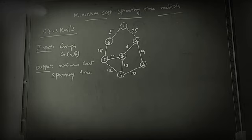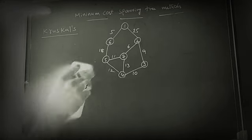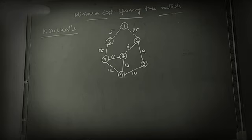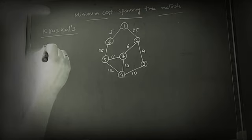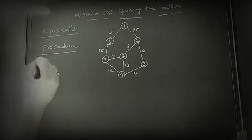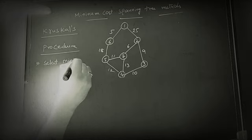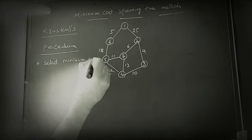Then go to the procedure, how this algorithm works to find the minimum cost spanning tree. Let us take the procedure. Here also select minimum cost. The first step is common in both cases: minimum cost edge.